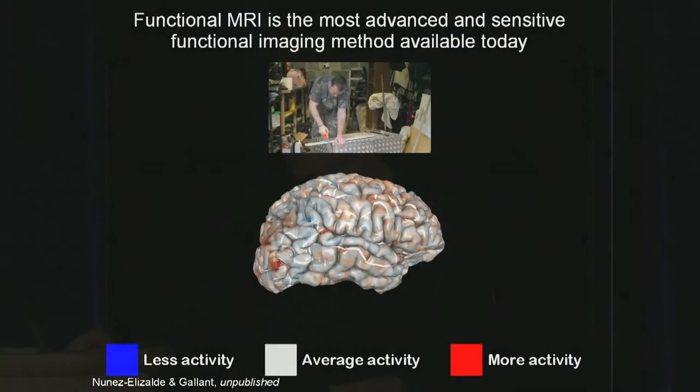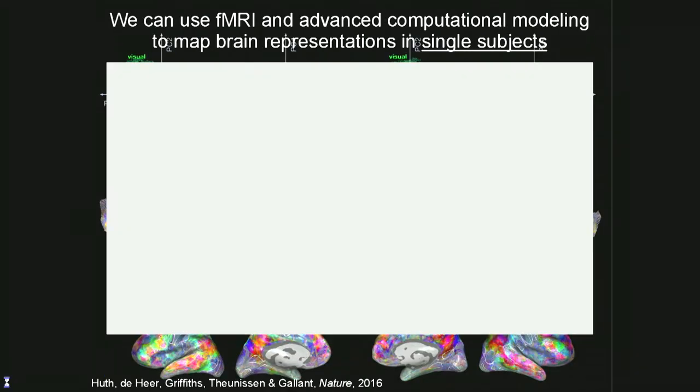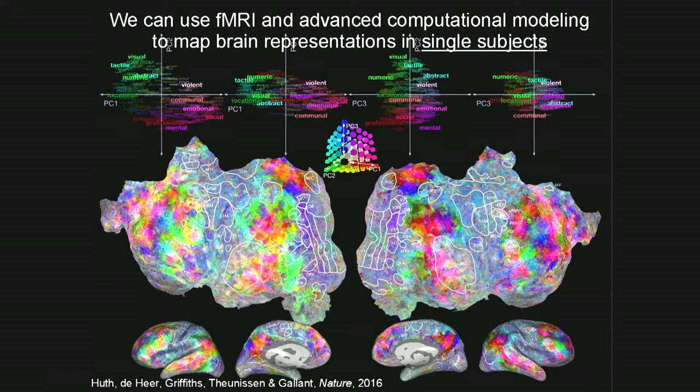Each individual piece of that pattern collectively produces the emergent property of thought. And matching thought to patterns of brain activity is really just a giant machine learning regression problem — there's some complicated thought, there's a pattern of brain activity, and we want to find the systematic relationships between those two. We can do that using modern technology and a lot of computer power.